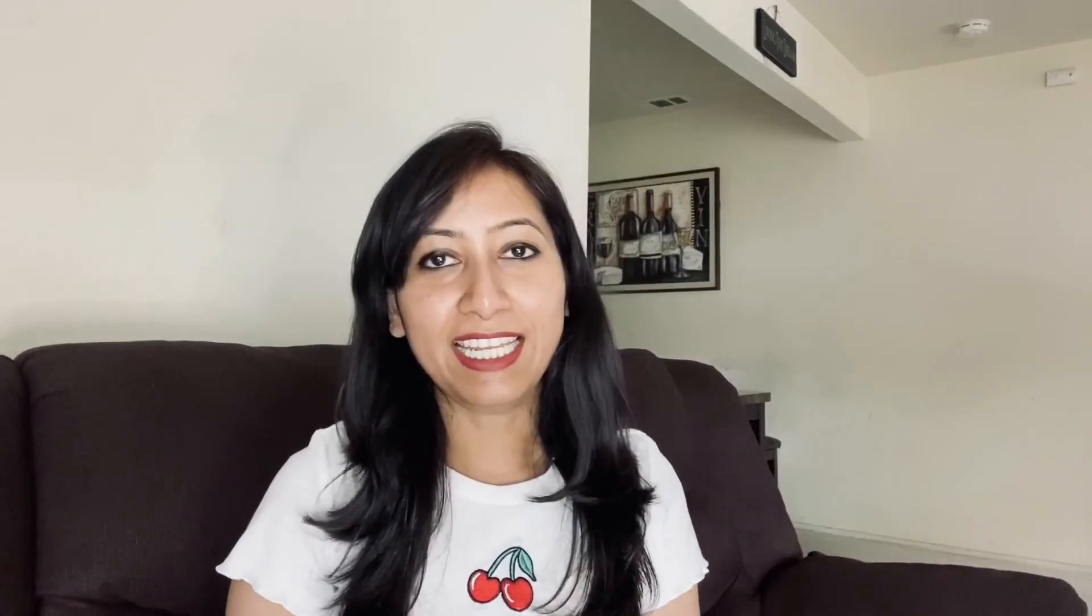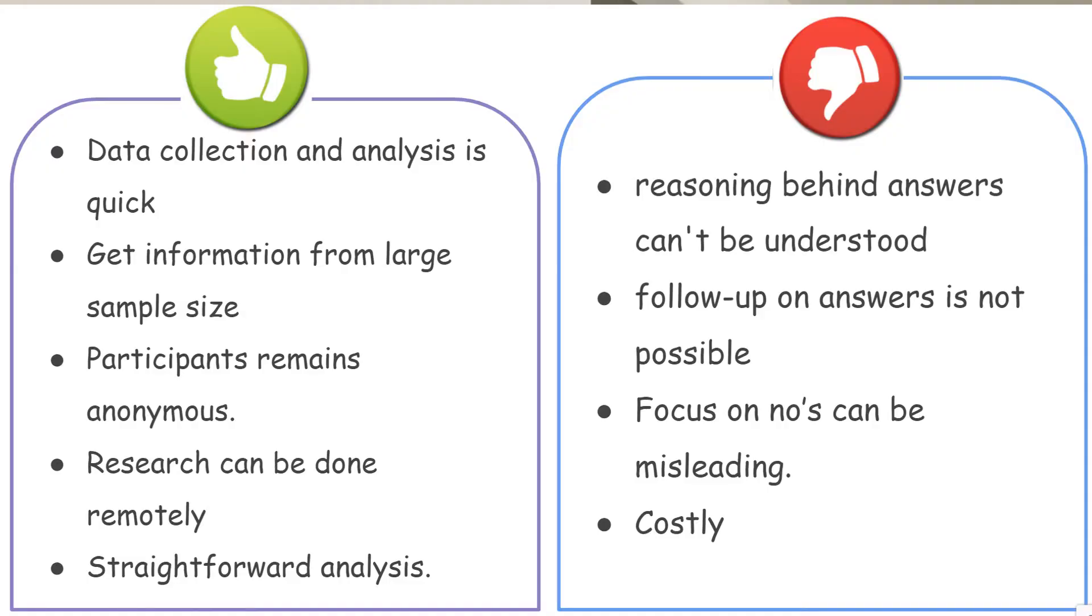Let's understand the advantages and disadvantages of this type of research. The best thing with quantitative research is that you can collect a lot of data from larger sample size. Because you use mathematical tools, the research collection is quick and analysis is quick as well. This form of research can be done remotely and the participant identity remains anonymous.